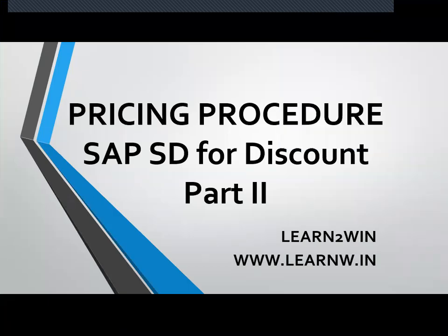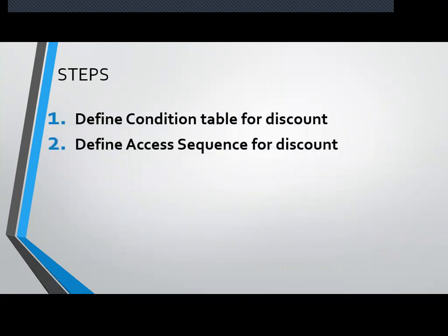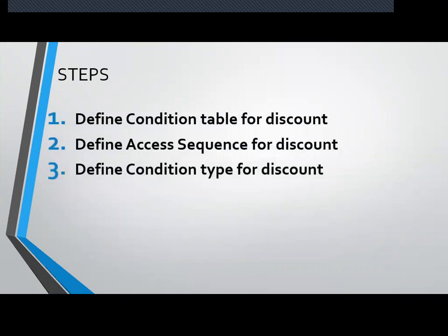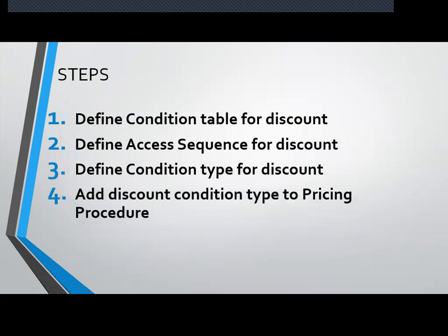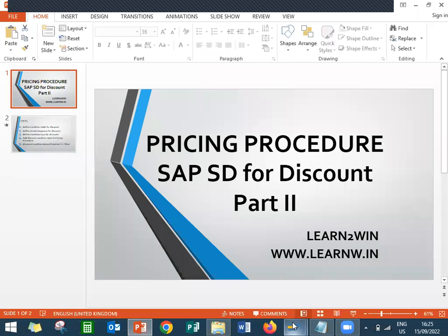Hello everybody, Swaminath here. Today we are going to see pricing procedure for SAP SD with discount, customer discount, customer material discount. This is my part 2 video. What I am going to do is: step 1, I am going to create a condition table for discount, create an access sequence for discount, then condition type for discount, and add that condition type to the existing pricing procedure shown in my earlier video. Then discount condition records and show you in the sales order. Let me show you in the live system.